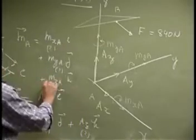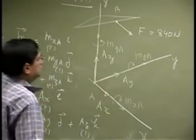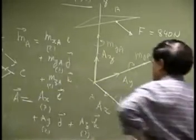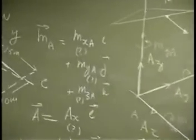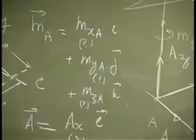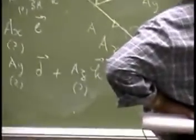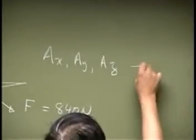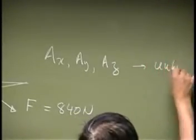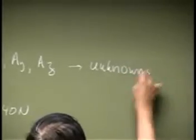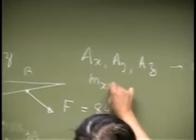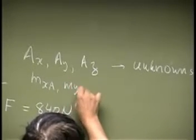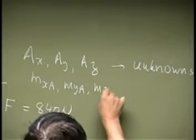Where this one is also unknown. So, if I look at the actual unknowns, or if I count all the unknowns, you have AX, AY and AZ. These three are unknown, and then you have MXA, MYA and MZA, these are also unknown.